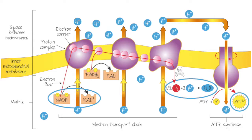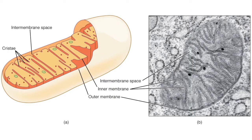One last point about where this is taking place. We've talked about the matrix, the inner membrane, and the intermembrane space. Because everything takes place across a membrane and we need so much membrane space, the inner membrane of the mitochondrion is folded so as to increase the surface area. All of these folds are called cristae, and that is something very important to remember — increasing surface area, which you see everywhere in an organism wherever transport across a membrane is critically important.